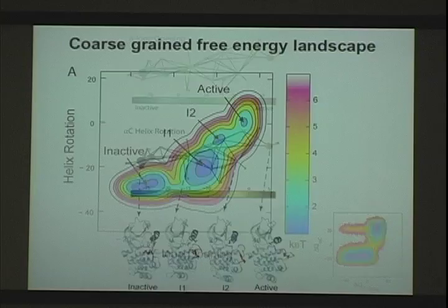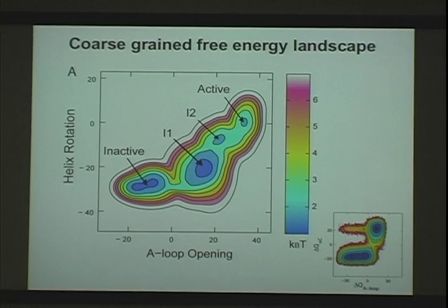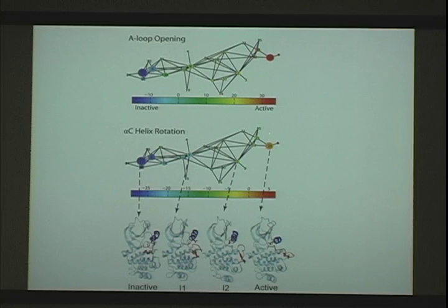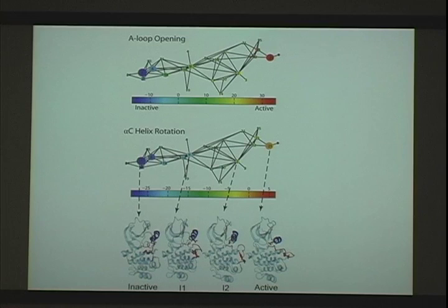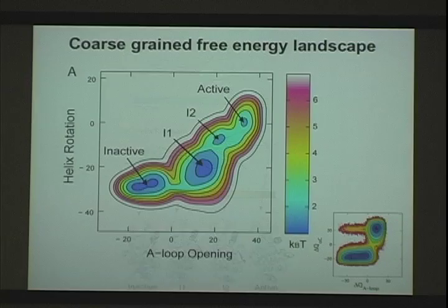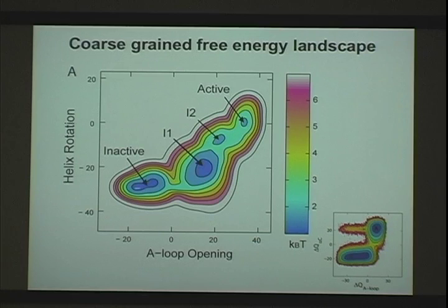It's actually interesting to see that if you compare the loop motion and helix rotation, they don't occur at the same time. Now it's possible to use all the information from that clustering — we have an estimate of the probability of all those states from the Markov transition between all states. We convolute them with a Gaussian smearing function, in the spirit of the metadynamics of Michele Parrinello, to construct a tentative free energy surface corresponding to the opening of the loop and the helix rotation.